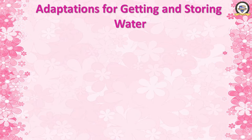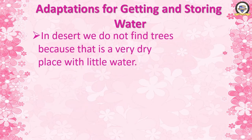Now we move to the second adaptation: adaptation for getting and storing water. Trees that grow in areas which receive very less rainfall have very little water available. They must adapt to get and store water. In the desert, we do not find trees because it is a very dry place with little water.